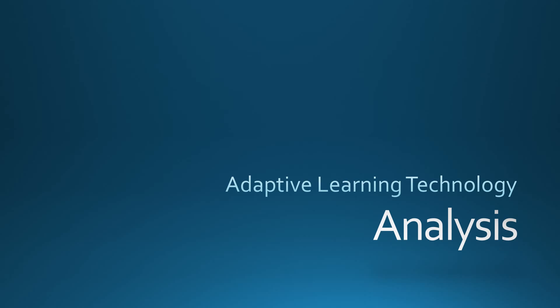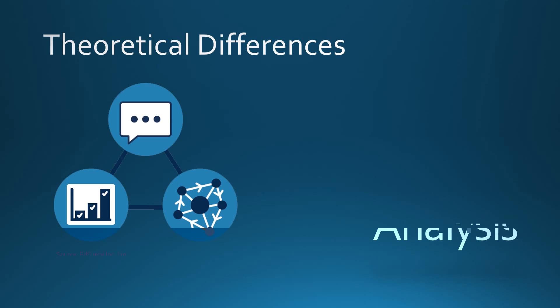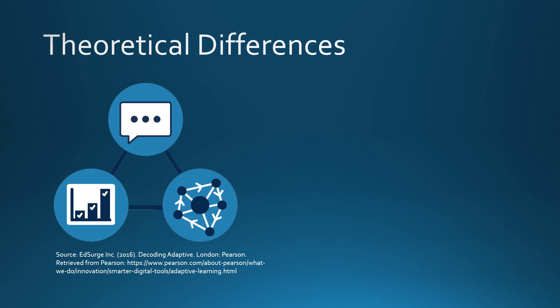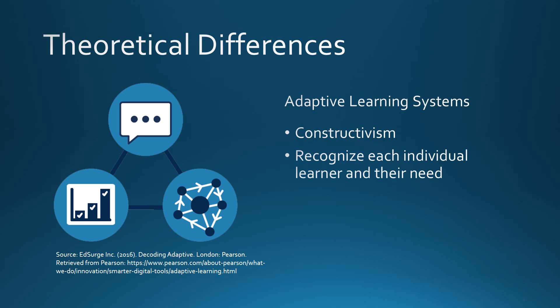While the teaching machine was based on behaviorism, adaptive learning systems align more with constructivism, which highlights learner control. Rather than analyzing behavior, adaptive learning systems recognize the difference of each learner and adapt to their needs. Where the content provided by the teaching machine was the same for each learner, adaptive learning systems change the way content is presented based on the learner's needs.